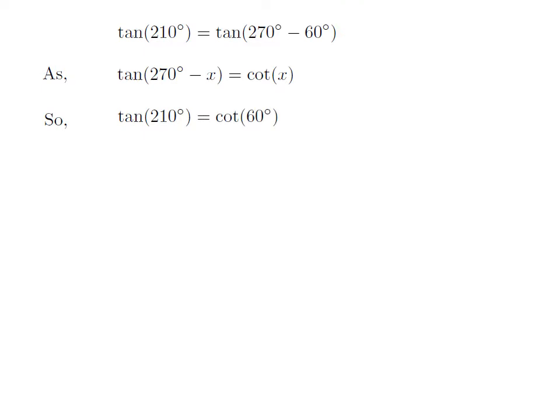Let us apply the above identity for tangent of 210 degrees. Here x is 60 degrees. So tangent of 210 degrees is equal to cotangent of 60 degrees.